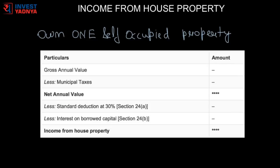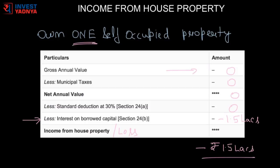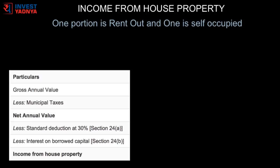Now let's discuss the scenario when you own one self-occupied house property. If you are using your property for residence throughout the year and it's not let out or used for any other purpose, the gross annual value of the property is nil. There is no income from your house property, but if you have taken a loan, you can still claim the deduction under interest on borrowed capital — for example, Rs 1,50,000. So your income from house property will basically be a loss due to house property of Rs 1,50,000. Let's also discuss a scenario where a portion of one property is rented out and the remaining portion is self-occupied.